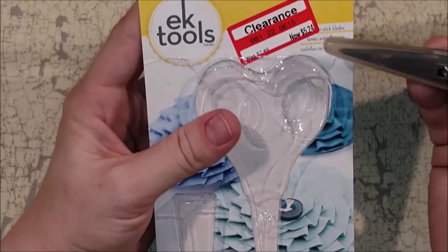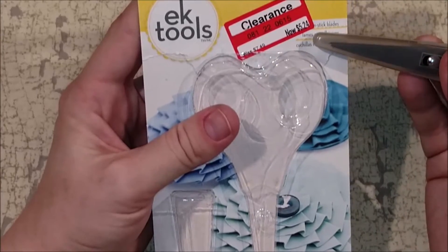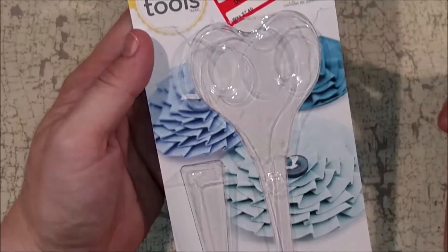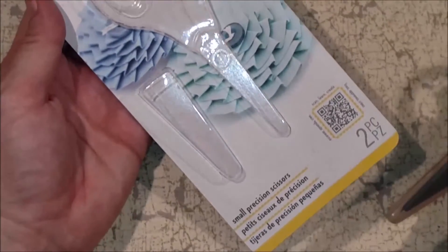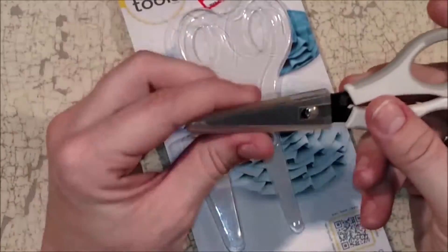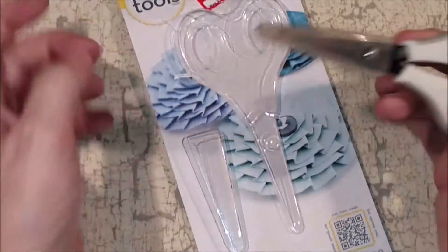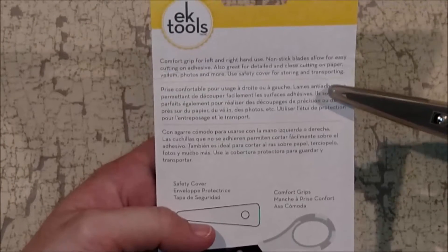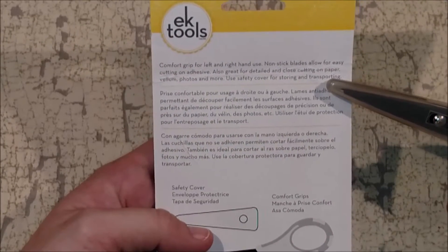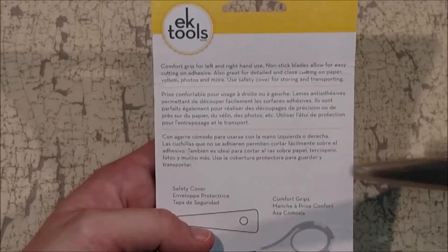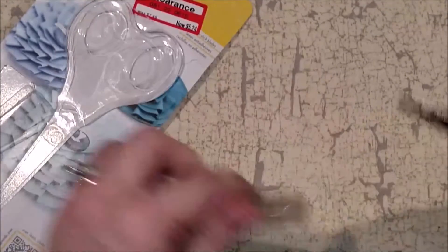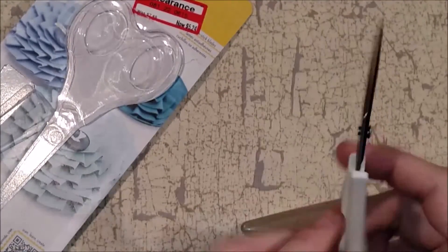I fibbed. So, I got one more thing at Target. I found these scissors on clearance for $5.24. They are the EK tools small precision scissors. They come with the cover. And they are a comfort grip, non-stick blade. And they have a really sharp point. So, I thought that was a really good deal. And they are non-stick.